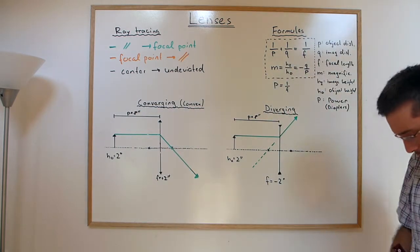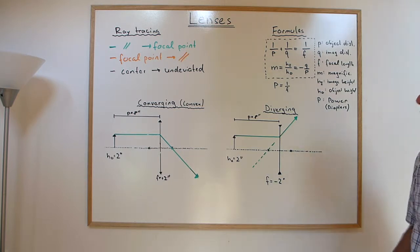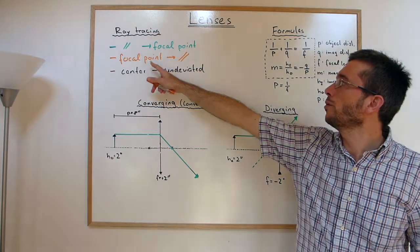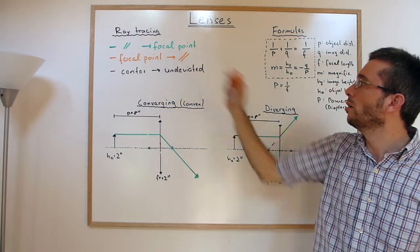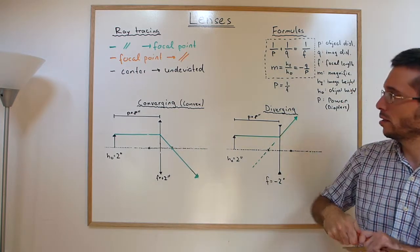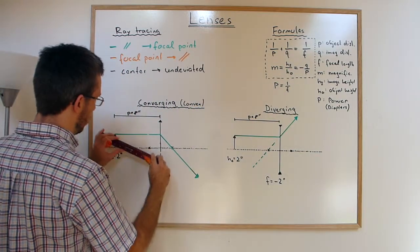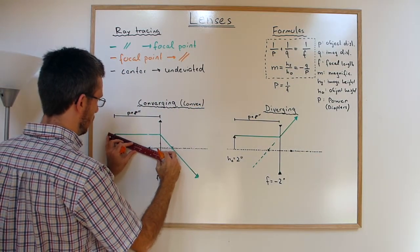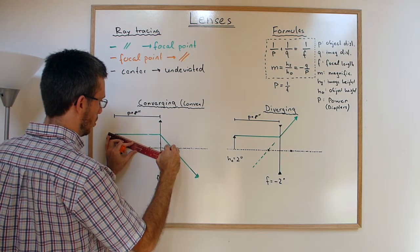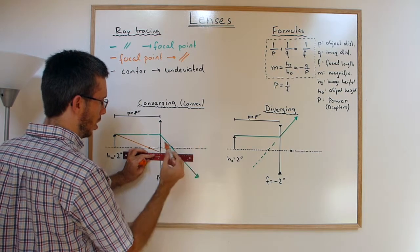Now the second type of rays is kind of the inverse of the one that we just did. Any ray through the focal point will become parallel. So on the left side, for the converging lens, we're using the left focal point. And this ray will become parallel.